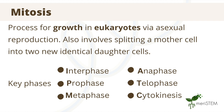Moving on to mitosis, this is a process that helps eukaryotes grow through asexual reproduction. Similarly to binary fission, it is a process that starts with a mother cell dividing into two identical daughter cells. We can view mitosis by splitting the cell's life cycle into six phases: the interphase, prophase, metaphase, anaphase, telophase, and cytokinesis — or IPMAT-C for short.